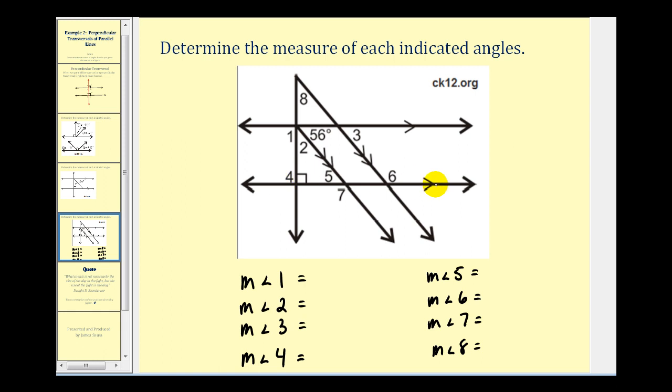Notice we have two sets of parallel lines and here we have a perpendicular transversal. So we know if we have a perpendicular transversal, eight right angles are formed.